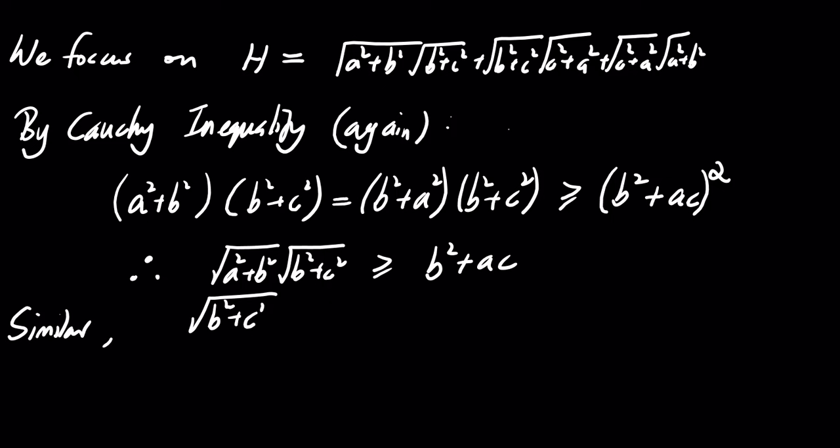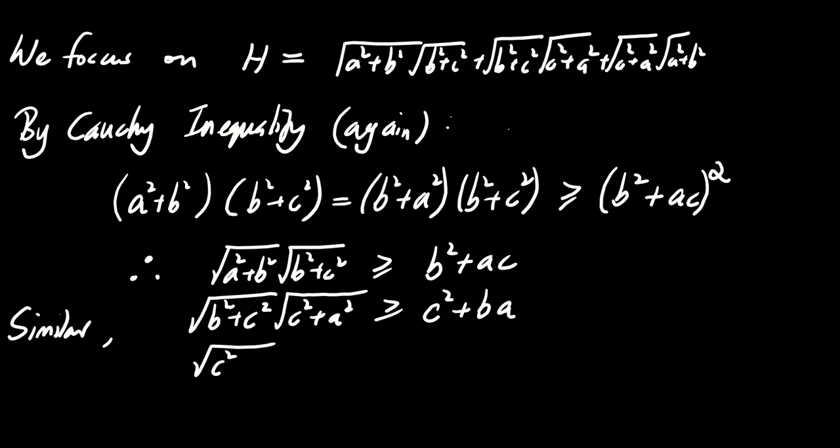Similarly, the square root of B squared plus C squared times the square root of C squared plus A squared is greater than or equal to C squared plus BA. And finally, the square root of C squared plus A squared times the square root of A squared plus B squared is greater than or equal to A squared plus CB.